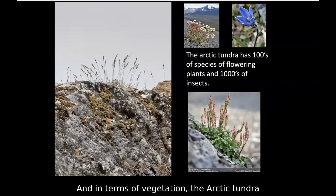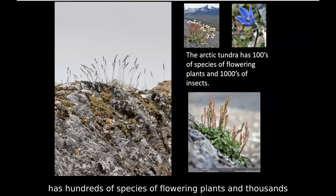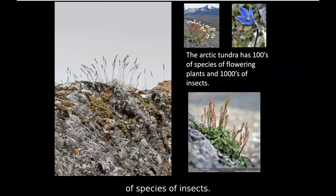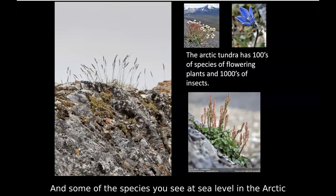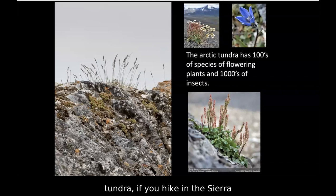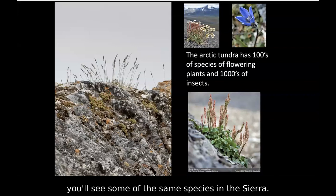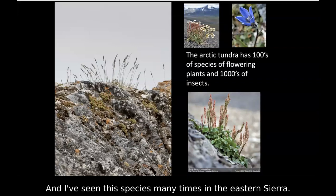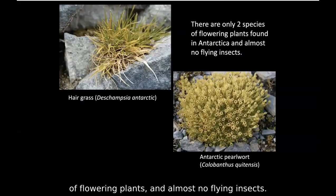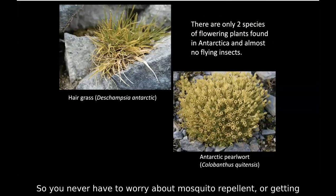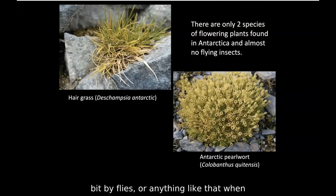The Arctic tundra has hundreds of species of flowering plants and thousands of species of insects. One species I noticed — mountain sorrel — you can also find at sea level in the Arctic tundra and at alpine elevations in the Sierra Nevada. In the Antarctic, there are only two species of flowering plants and almost no flying insects, so you never have to worry about mosquito repellent or getting bitten by flies when you're in Antarctic regions.